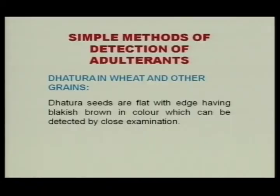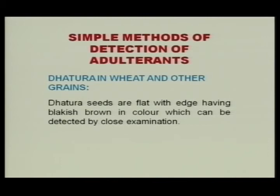Datura seeds are added in wheat and other grains — they can be detected by physical examination. Datura seeds are flat with edges having a blackish-brown color, which can be easily detected by close examination. For detection of coal tar dye in chili powder, which is normally added to increase the brightness of color, we have to detect the presence of coal tar dye if chili powder is adulterated with chalk powder, starch, etc.